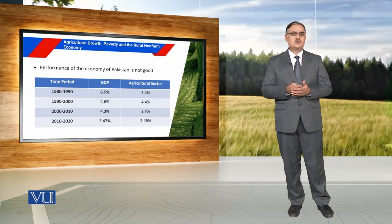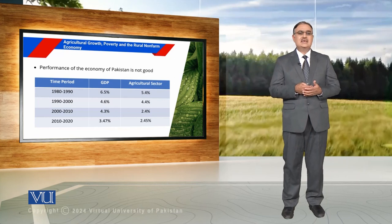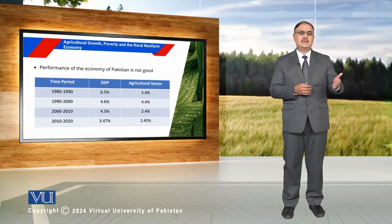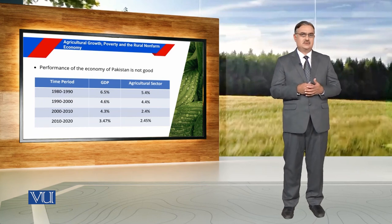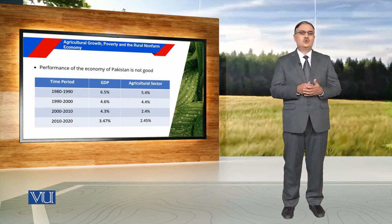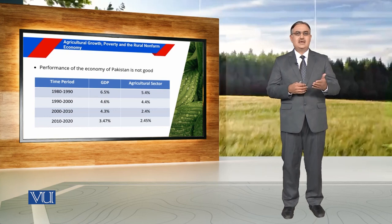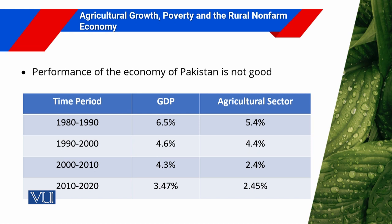If we talk about Pakistan's economic performance, we can observe that during the last four decades there is a consistent decline in GDP growth rate. In the decade of the 1980s, GDP was increasing at a rate of 6.5%, which declined to 3.47% in the decade of 2010. Similarly, the agricultural sector grew at 5.4% in the 1980s, but only 2.45% from 2010 to 2020.